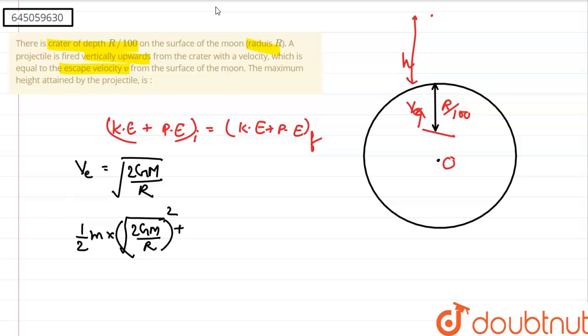Now potential energy is the tricky part here. We need to write the potential energy inside a solid sphere. The formula for that would be potential energy is equal to minus G capital M small m by r cube into 3 by 2 r square minus 1 by 2 small r whole square.